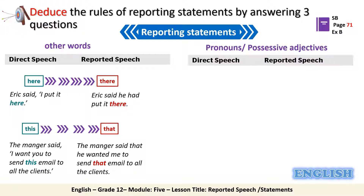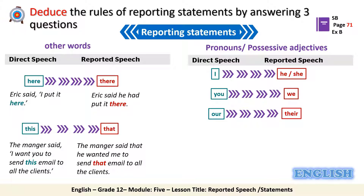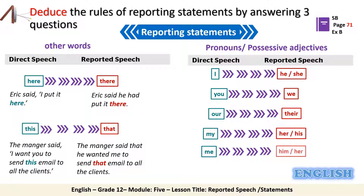Finally, let's see how the pronouns and possessive adjectives change when we rewrite statements in reported speech. Because the speaker is not the same, the personal pronouns, object pronouns, and possessive adjectives should not remain the same. So: 'I' changes to 'he' or 'she'; 'you' becomes 'we'; 'our' changes to 'their'; 'my' changes to 'her' or 'his'; 'me' changes to 'him' or 'her'; and 'us' changes to 'them.'